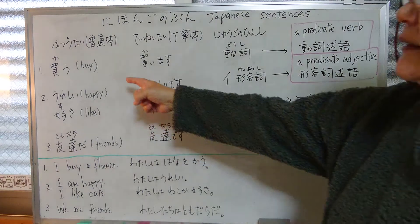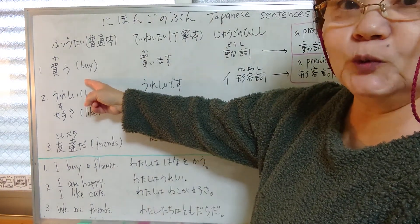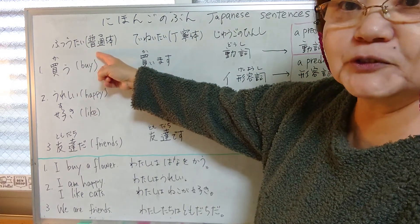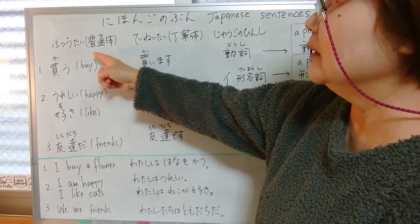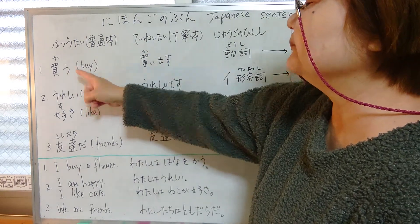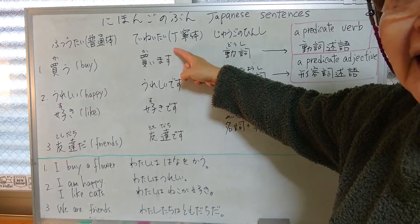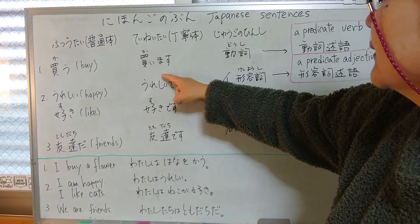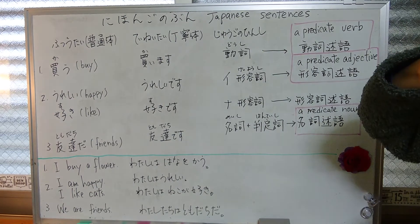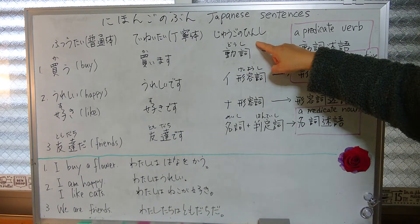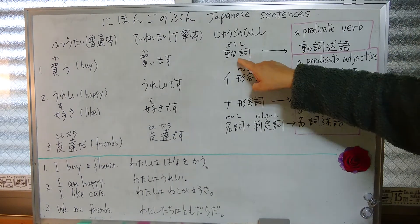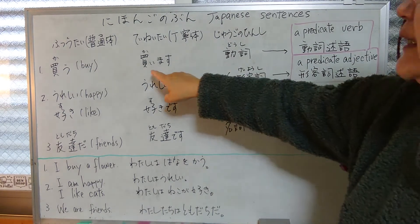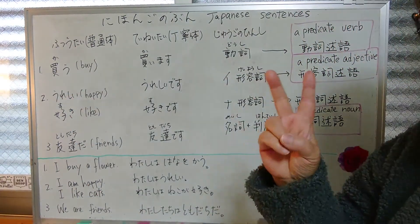Look at number one: kau — to buy. Kau — this is futsuu-tai, the normal form. And teinei-tai, the polite form: kaimasu. The part of speech of this predicate we call doushi — verb. So kaimasu / kau is a doushi.